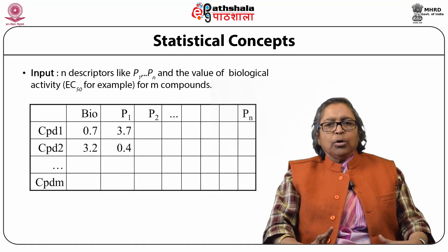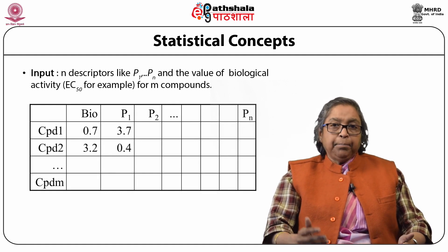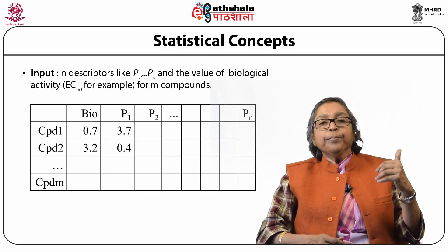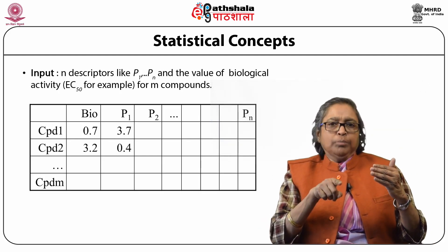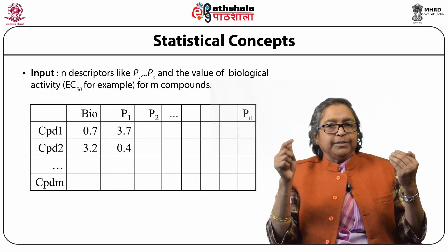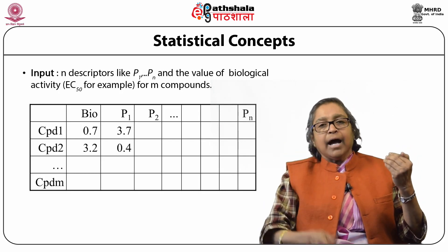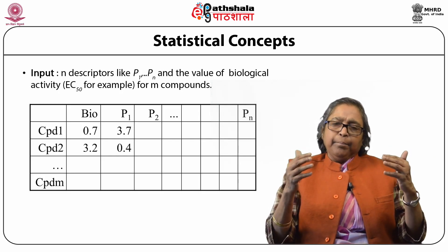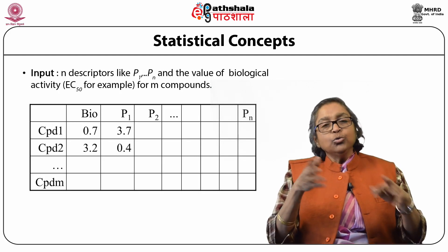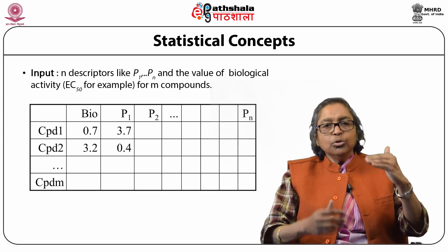The statistical concept is like this: if we have many descriptors like p1, p2, p3, p4, and a series of compounds shown on the left-hand side as compound 1, 2, 3, 4, then the biological activity in the first column is related with p1, p2, p3, p4 descriptors. These are chemical descriptors discussed in earlier modules. One wants to find many descriptors — let's say N descriptors — and how they influence the biological property. Using the bioactivity and developing many equations, for each compound we will have one set of equations.